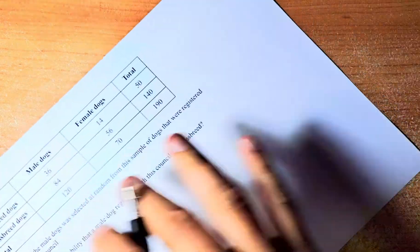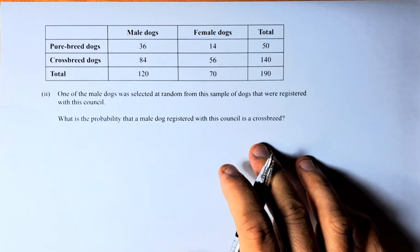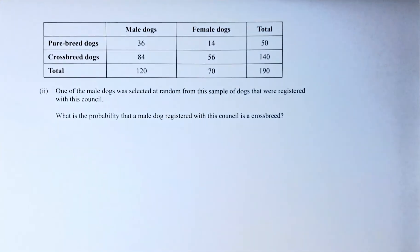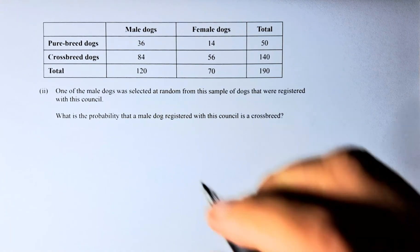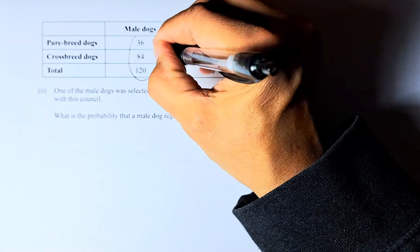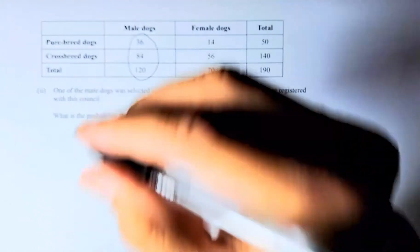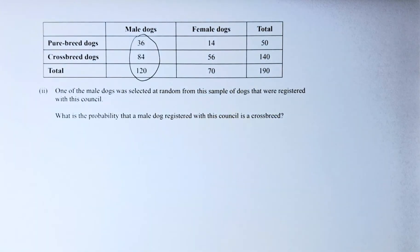Okay, let's go to do part 2 of question 2B. Part 2 looks something like this. One of the male dogs was selected at random, so we are only looking at the male dogs. We are not interested in the female dogs. We are only looking at the male dogs.